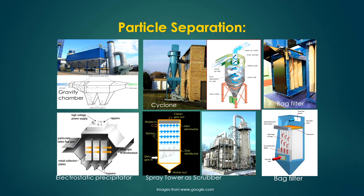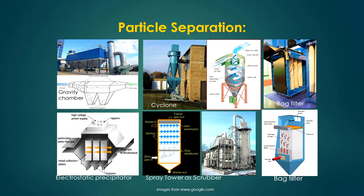Electrostatic precipitators produce ionic particles by passing the gas through an electrode; opposite plates surrounding the flow attract and collect the charged particles. Spray towers as scrubbers and bag filters are also used for separation of particulate material. All those processes will be discussed in detail in successive lectures.